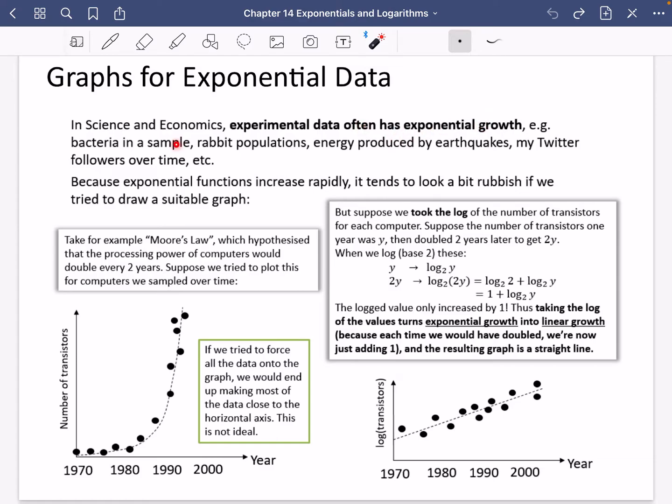So for example, it could be bacteria in a sample, the population of rabbits, energy produced by earthquakes, it could be Twitter followers over time. It could also be stuff to do with virus spreading, all sorts of stuff, really.